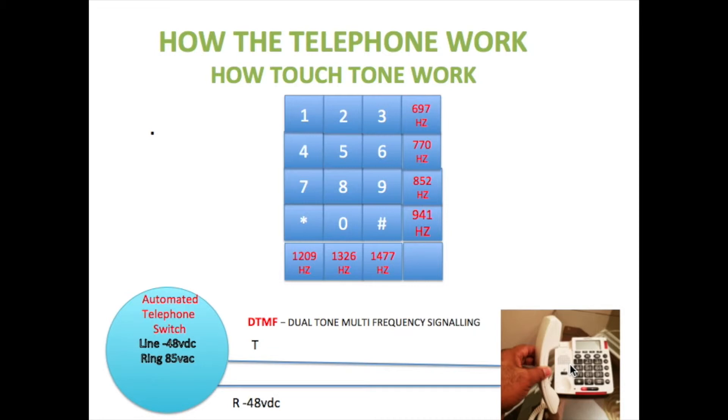The phone is programmed with a signaling type called dual tone multi frequency dialing. Now let's say the first number you dial is the number five. Here you would generate two frequencies: 770 Hertz and 1326 Hertz.